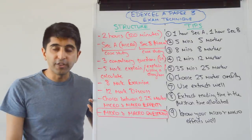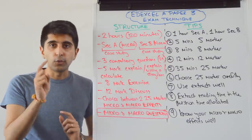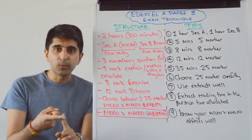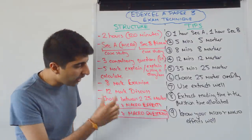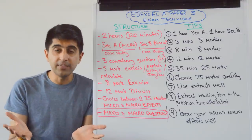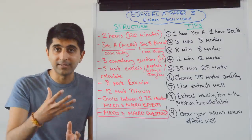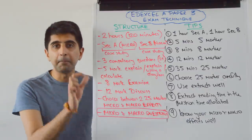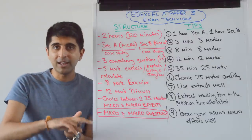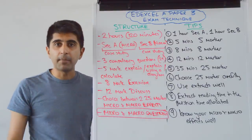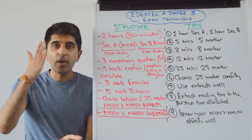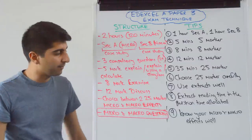You are going to have to choose one of those 25-markers to do — pick one from the two in Section A, and pick one from the two in Section B. They are going to be micro and macro-effects questions — evaluate questions, in the same style as Paper 1 and Paper 2, but crucially evaluating micro and macro-effects. The 25-marker in Paper 3 is different to the 25-marker in Paper 1 and Paper 2, so make sure you're aware of that.